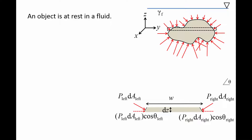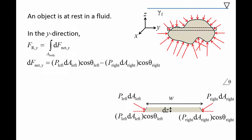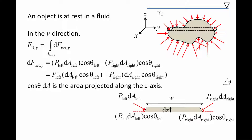Multiplying the pressure force by cosine theta gives the component of the force in the y direction. In order to find the resultant pressure force in the y direction, we add up the net pressure force in the y direction acting on each sliver by integrating over the entire body's surface. The net pressure force in the y direction acting on each sliver is the pressure force on the left side minus the pressure force on the right side. Notice that both terms contain the quantity dA times cosine theta, which is the area projected along the z axis. Since the vertical height of both sides is the same, the projected area on both sides is the same as well. That is, dA cosine theta on the left side is equal to dA cosine theta on the right side. For convenience, we will call this area dA proj.